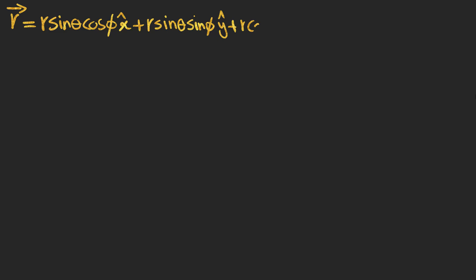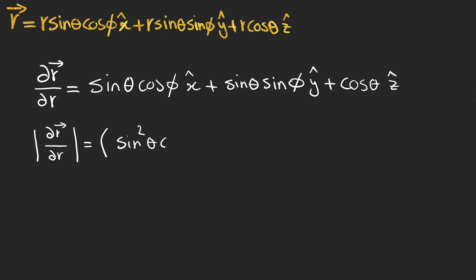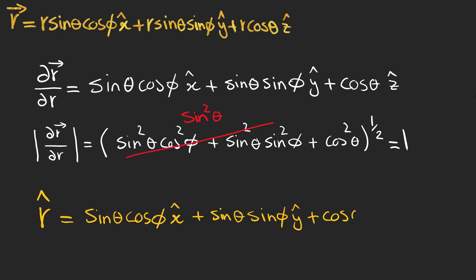We already know r in terms of these three spherical coordinates. To find r hat, first take the partial derivative of the vector r with respect to r, then find its magnitude by adding the square of all three components and taking the square root of the sum, which yields one because sine squared plus cosine squared is equal to one. Now by defining these two elements, we find r hat in terms of x hat, y hat, and z hat.